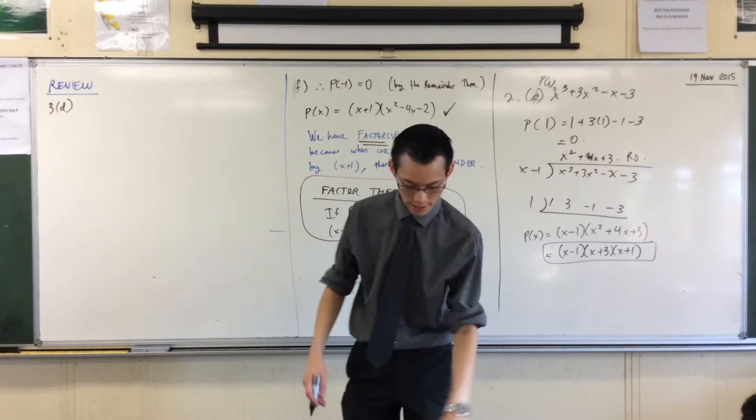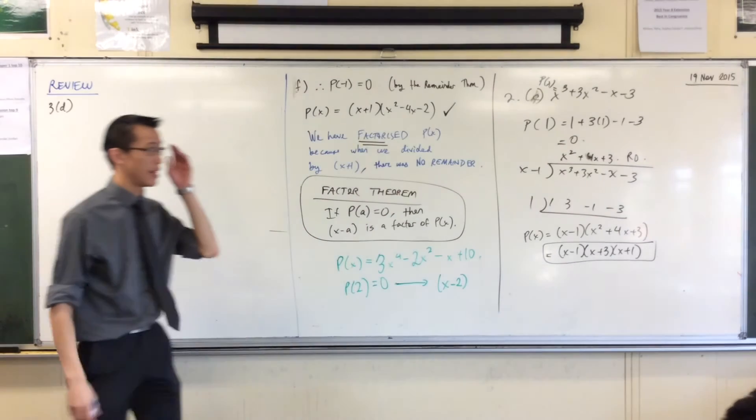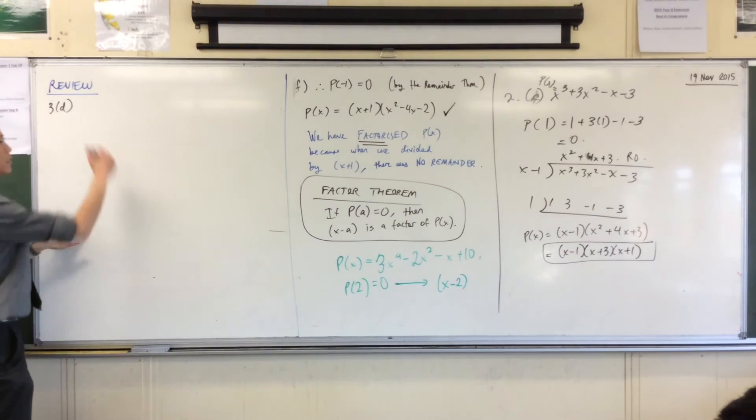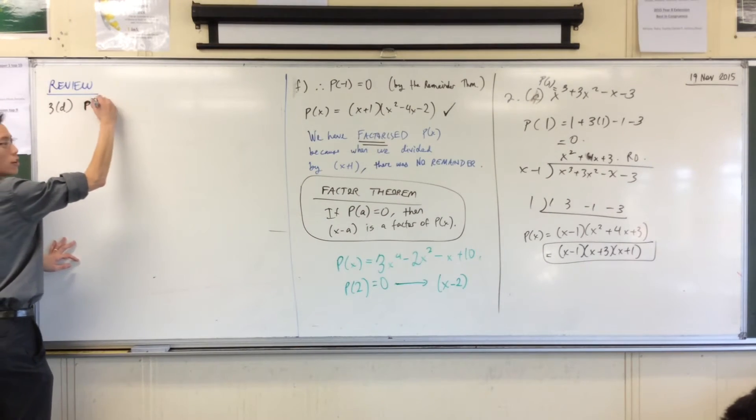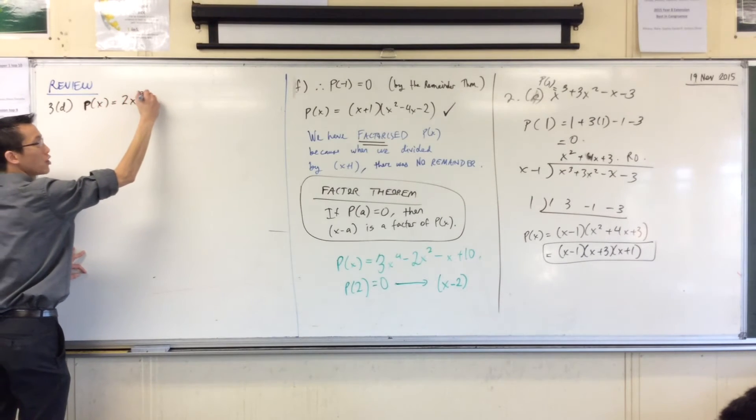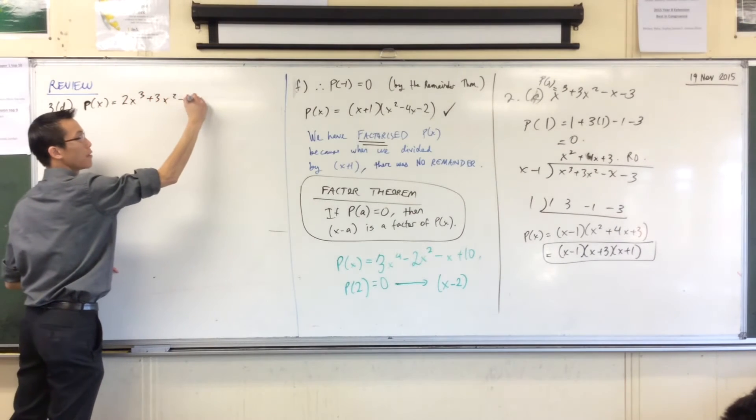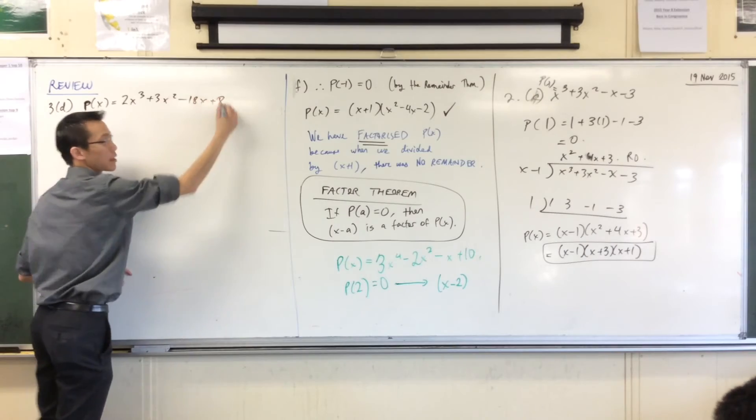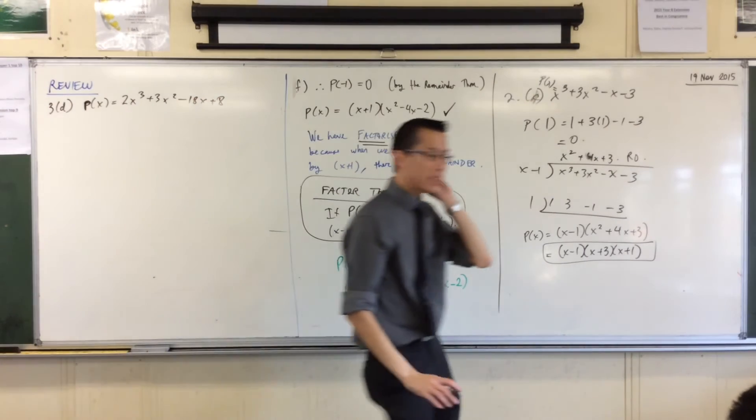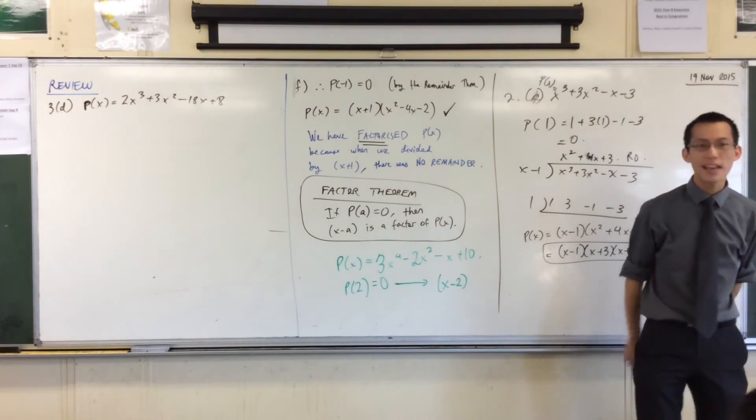Now, just to finish and this will be the last thing and then we'll pack up. I want you to look at 3D. We're going to take the same idea. Here's the polynomial. We'll just write this down. 2x cubed plus 3x squared minus 18x plus 8.